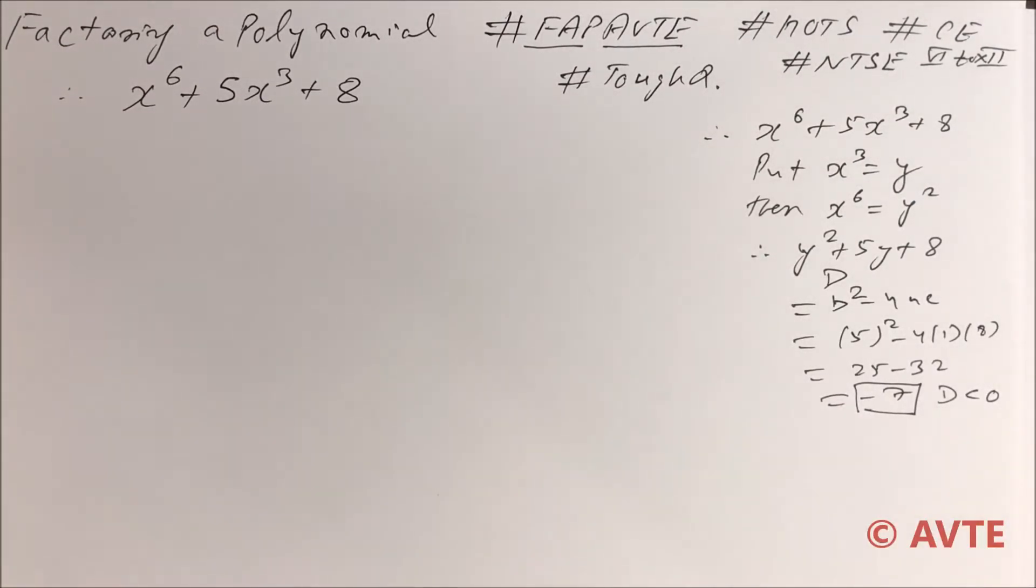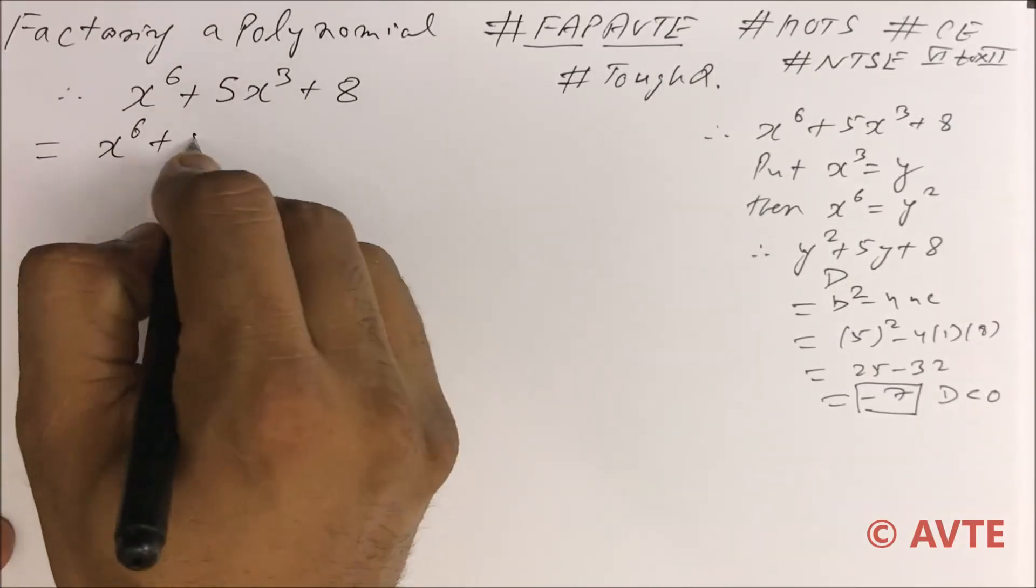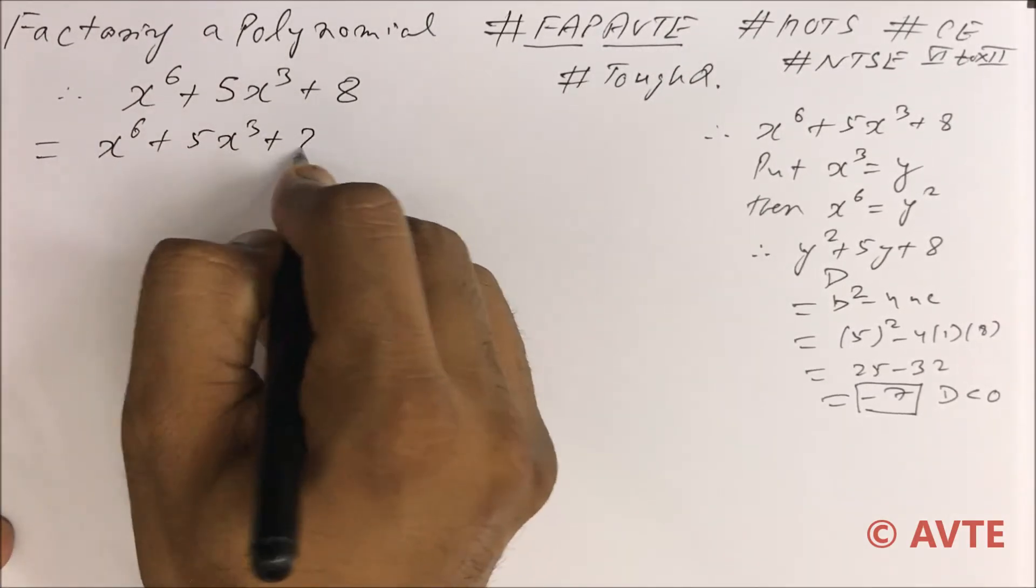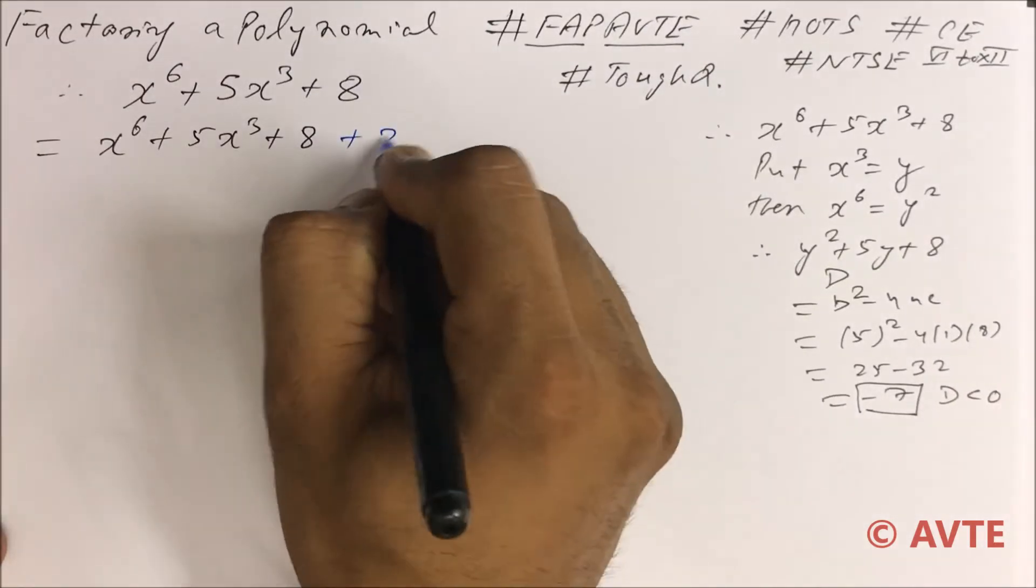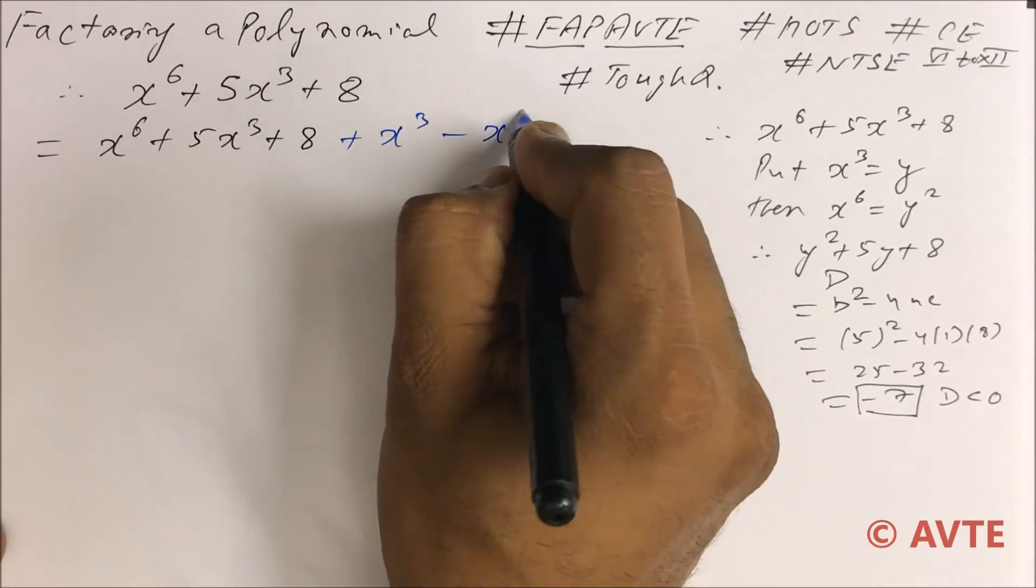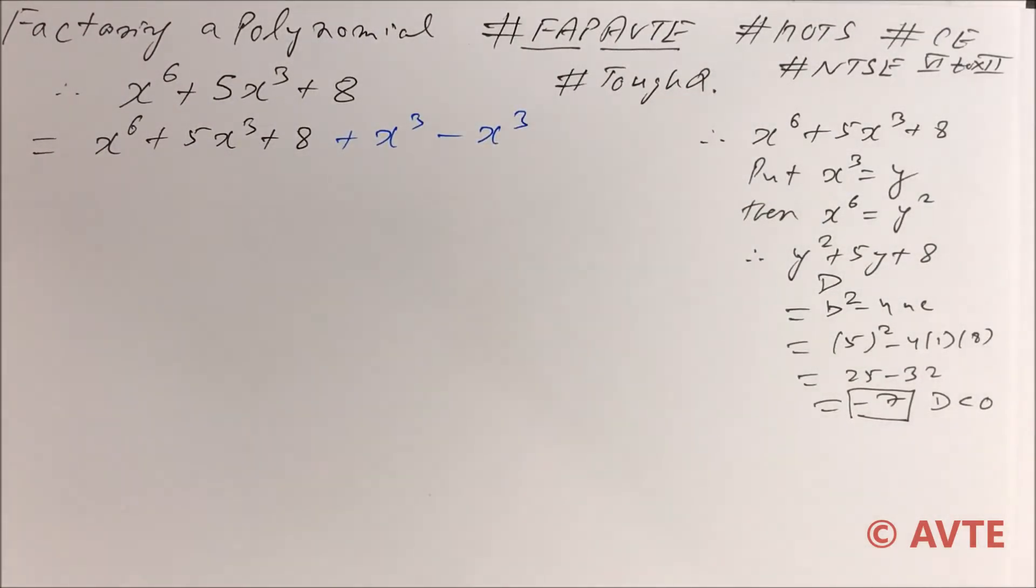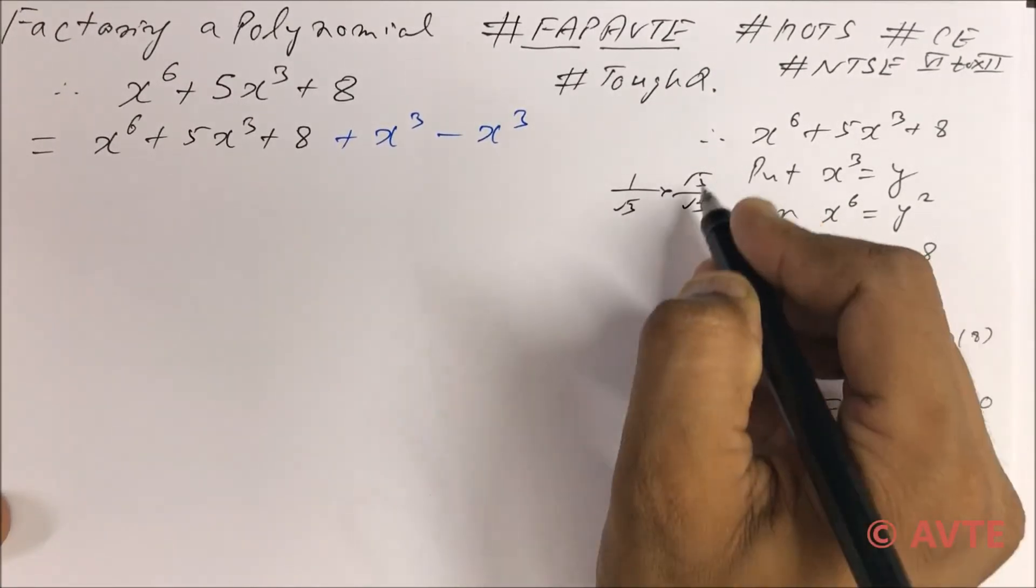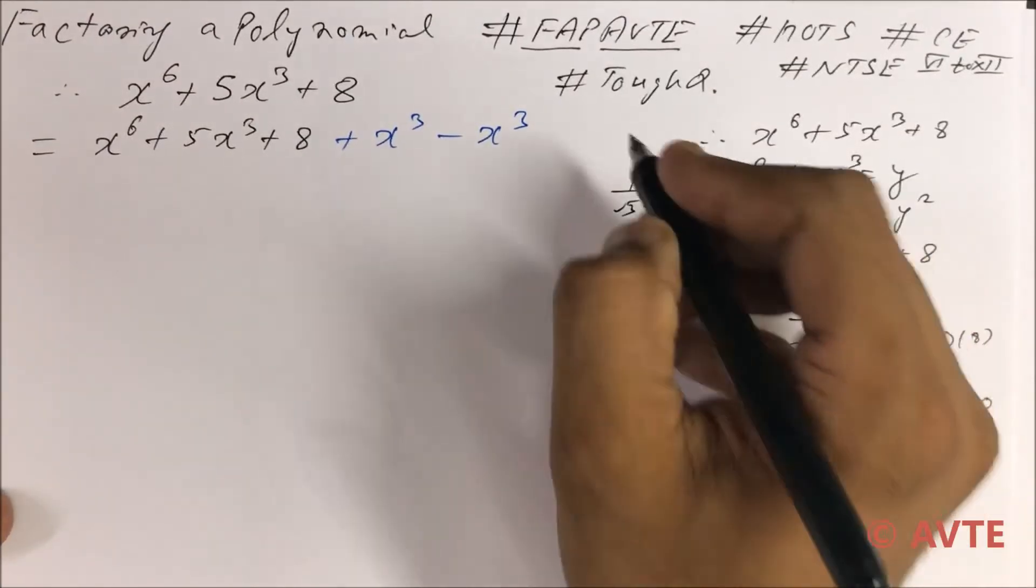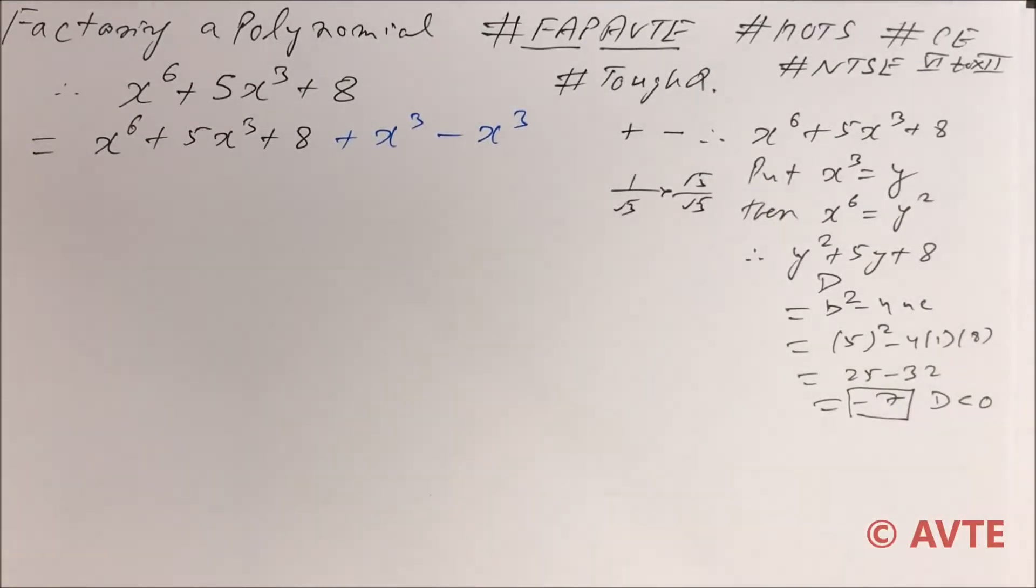So guys, this is a very good question. x raised to the power 6 plus 5x cube plus 8. Here we go. If we add x cube and minus x cube subtract, because if we something we add in the same step, we have to do minus. Like if you do rationalization, if you multiply something, you have to divide. This is also rationalization. If we add something, you have to subtract.